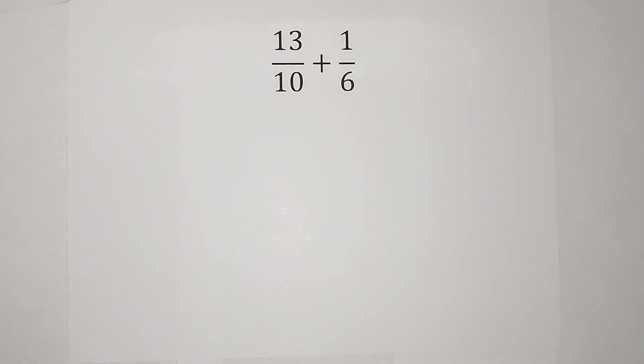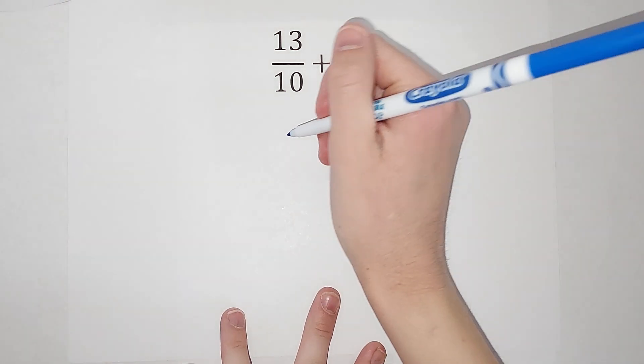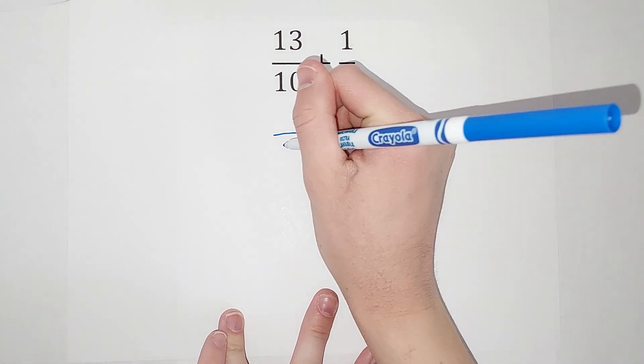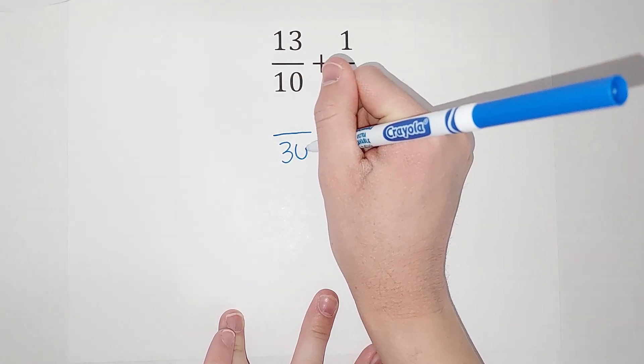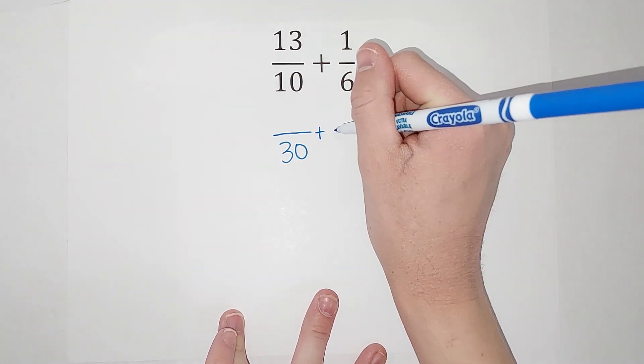So what I do is ask myself, what is the smallest number 10 and 6 both go into? The fancy math term for that is least common multiple. What's the smallest number they both go into? It is 30. So what I want is two fractions with denominators of 30 that I'm going to add together that are equal to these fractions.